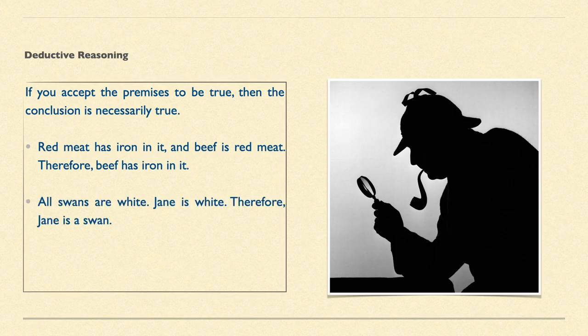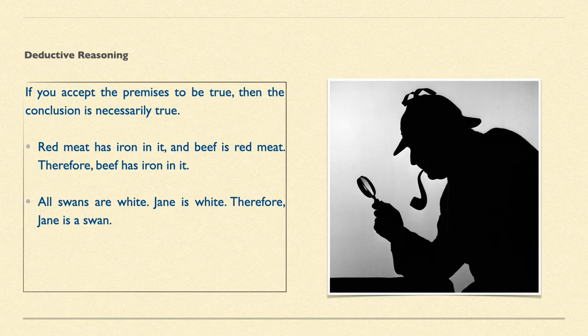If you put forward the premise that all swans are white, and then you put Jane in the mix in the next premise and say Jane is white, following if both premises are believed to be true, then Jane is a swan. Well, Jane might be a swan if you've named a swan Jane. But if we're talking about a human Jane, just because the colour of her skin might be considered white, that wouldn't necessarily follow that she is a swan. And that would be an invalid deductive proof.